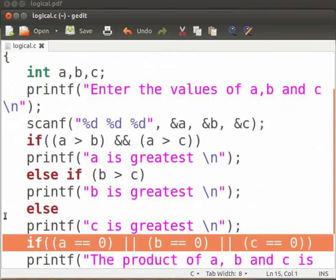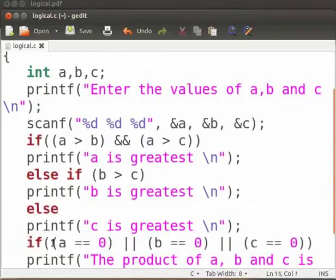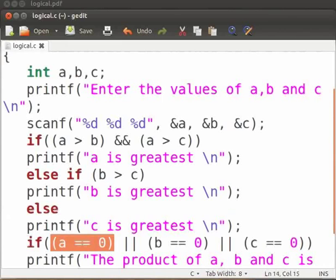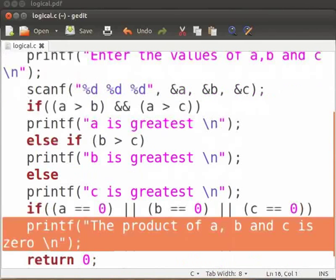We now come to the logical OR operator. Here, any one of the conditions has to be true for logical OR to return a true value. The expression is not evaluated further on encountering a true condition. So, if a equals equals zero, then the remaining two expressions won't be evaluated. This printf statement is executed if either of a, b or c is zero.